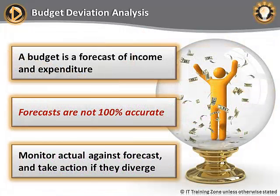We'll now look at one particular analysis: budget deviation analysis. We'll be studying budgeting in detail in the next lesson. For now, let's just remember that a budget forecasts income and expenditure over the budgeting period, which is usually one year. The purpose of the budget is to ensure that the organization — in our case, the service provider — has enough money to allow it to do all that it has been asked to do.